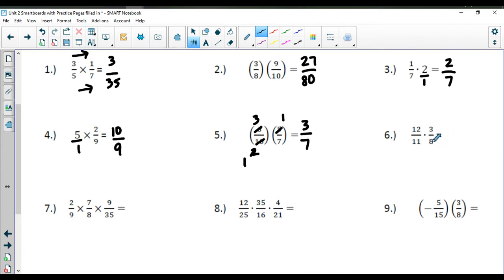Over here, common factors between 12 and 8, they're both divisible by 4. So that'll become a 2. That'll become a 3. 3 times 3 is 9. 11 times 2 is 22.